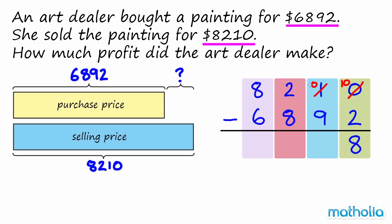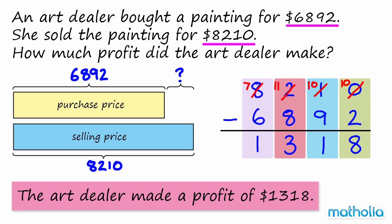$8,210 minus $6,892 is $1,318. So the art dealer made a profit of $1,318.